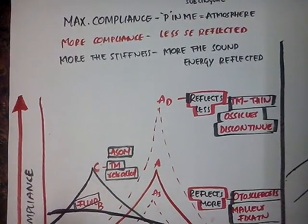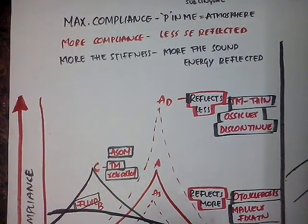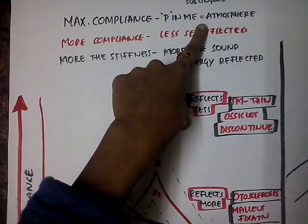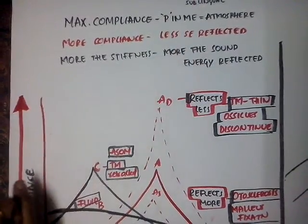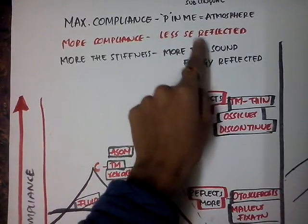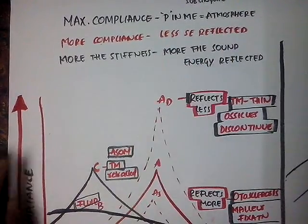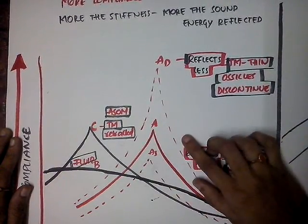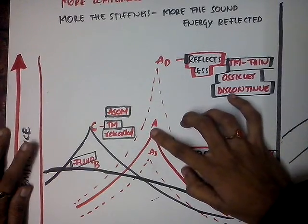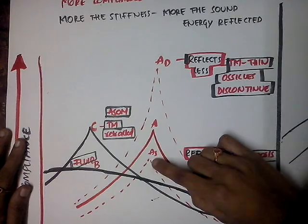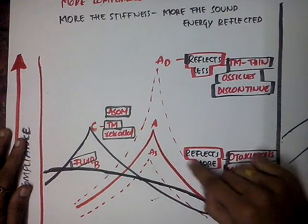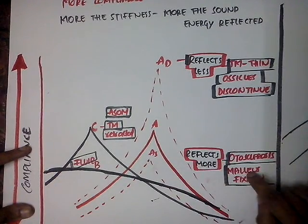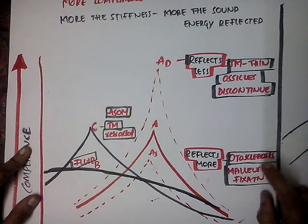Summary: Sound is reflected back and some sound is absorbed by the tympanic membrane when a sound strikes it. Maximum compliance is seen in the normal tympanogram when the pressure in the middle ear and atmospheric pressure are equal. Compliance is inversely proportional to sound energy reflected. AS indicates less compliance and more sound reflected, due to otosclerosis and fixation of the ossicles.